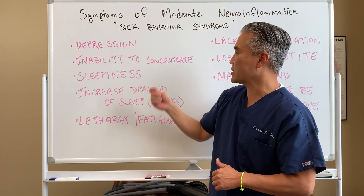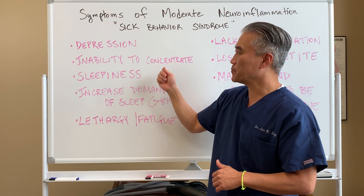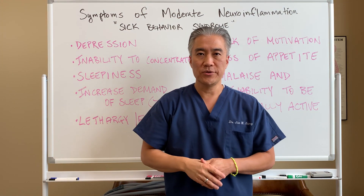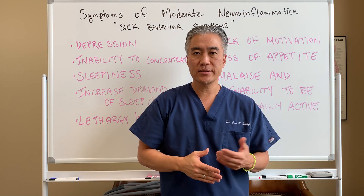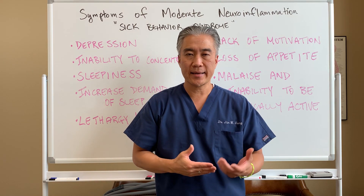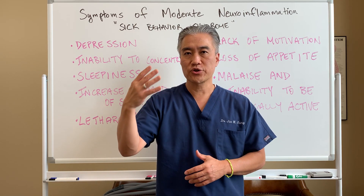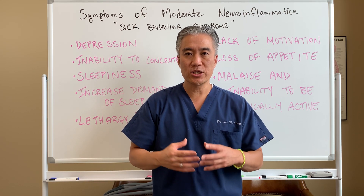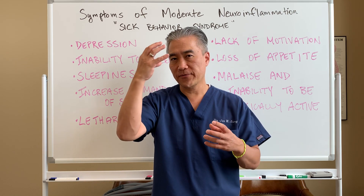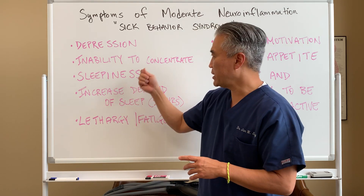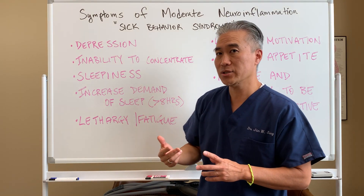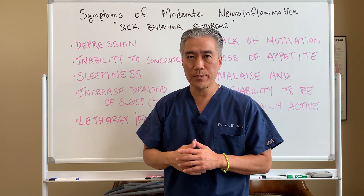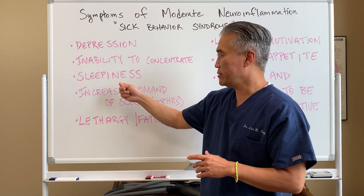Another symptom is inability to concentrate, and it goes along with the same thing with brain function. When you feel depressed and you can't focus, you can't concentrate — concentration, focus, attention, organization — all those things are frontal lobe activities. When you have inability to focus and concentrate, there can be an impact on the frontal lobe or other parts of the brain.